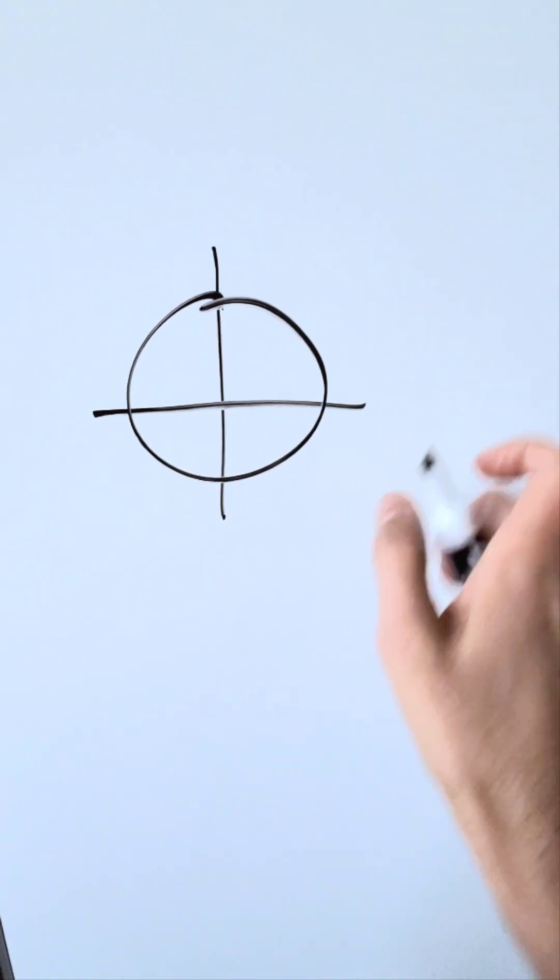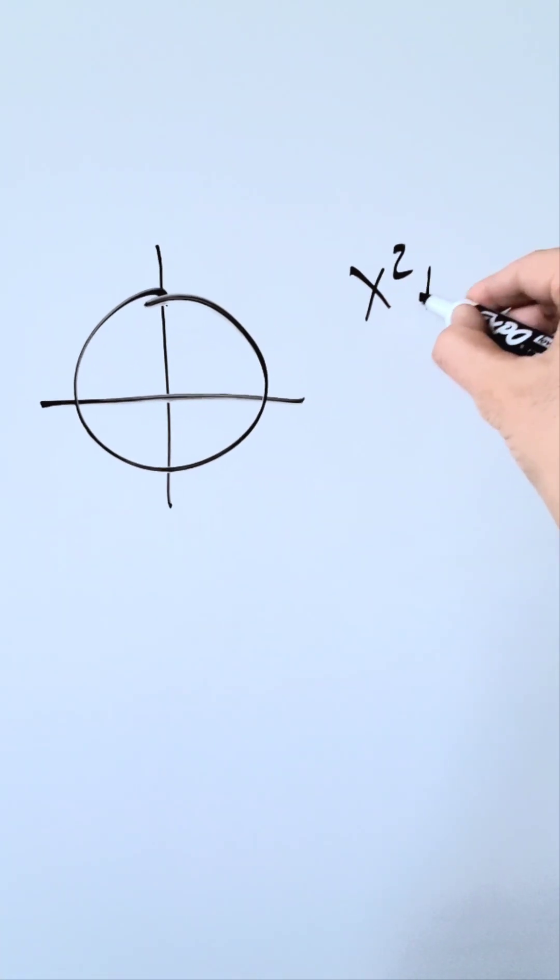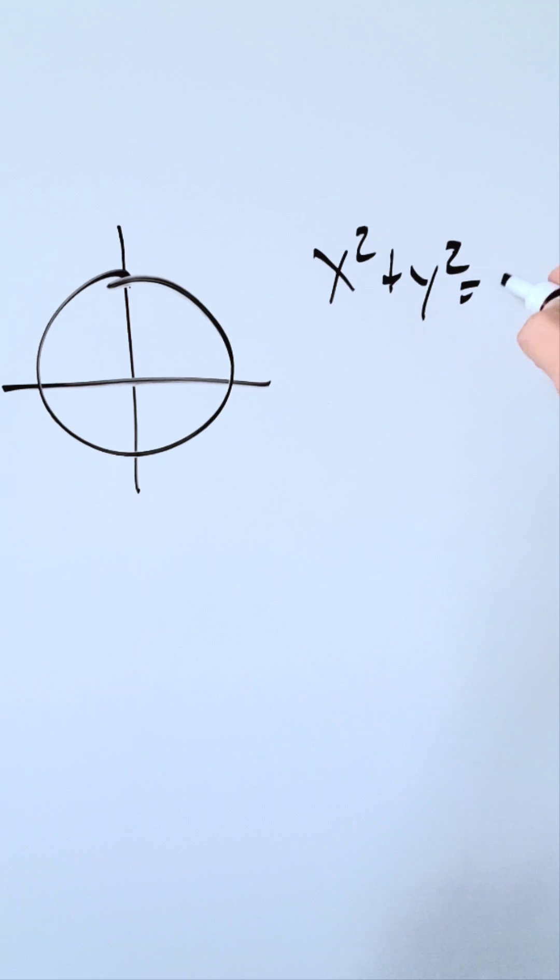If you start over here with the unit circle, you know the formula of a unit circle. It's not a function, but it's x squared plus y squared equals r squared.